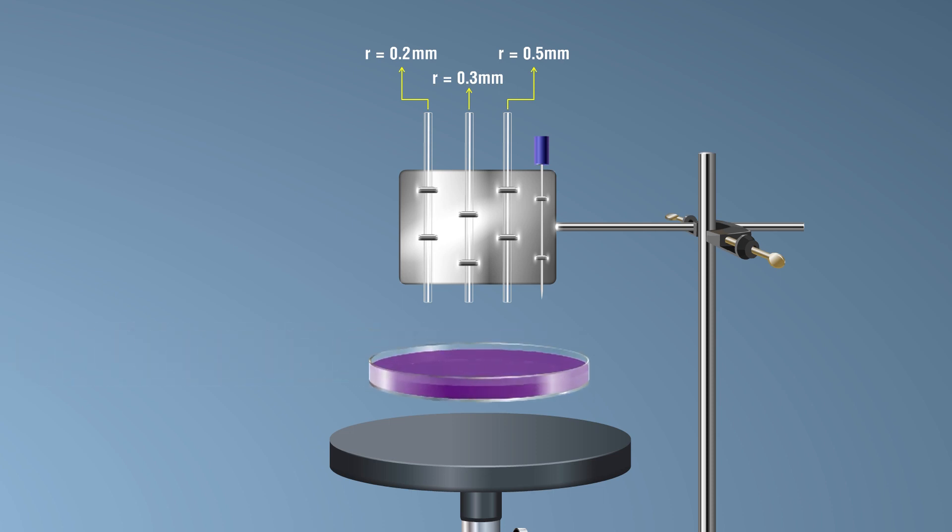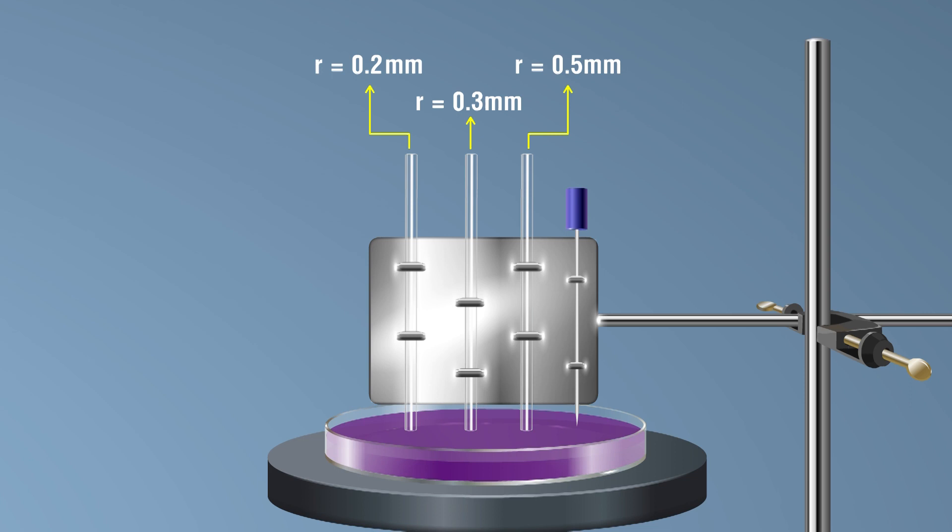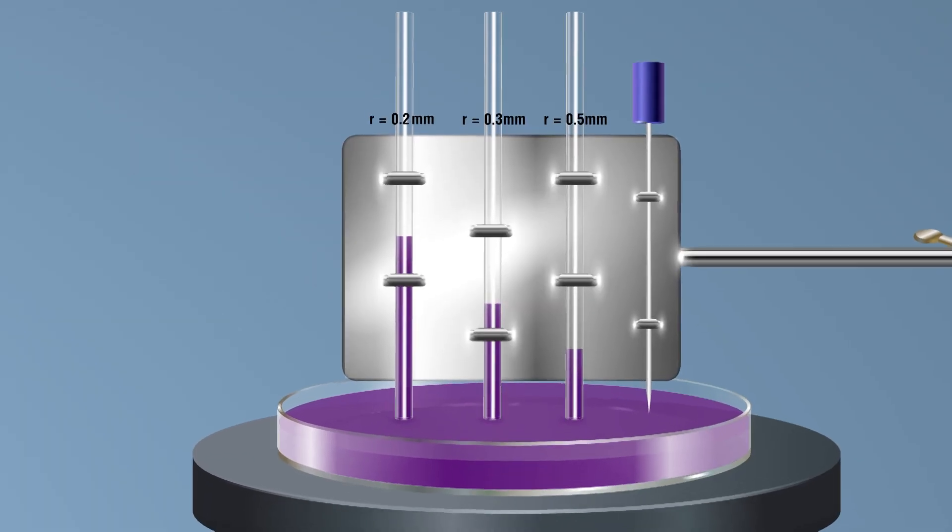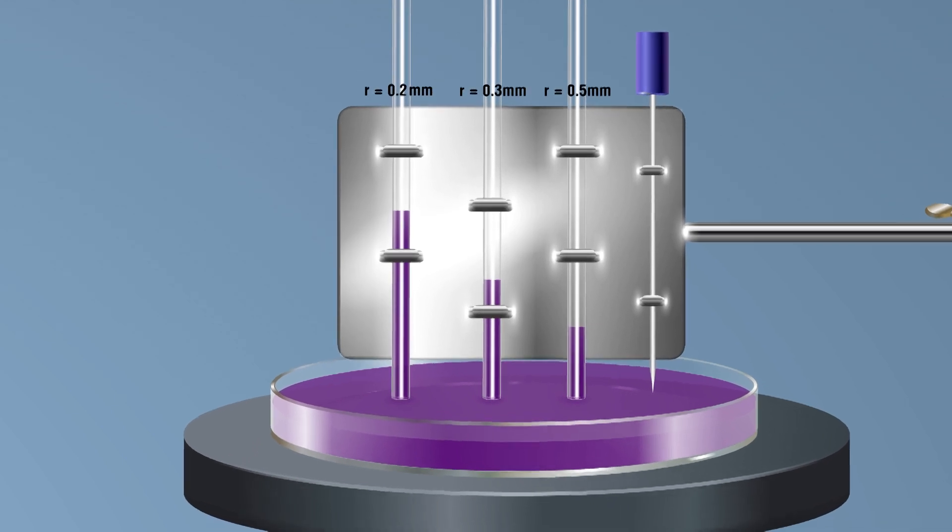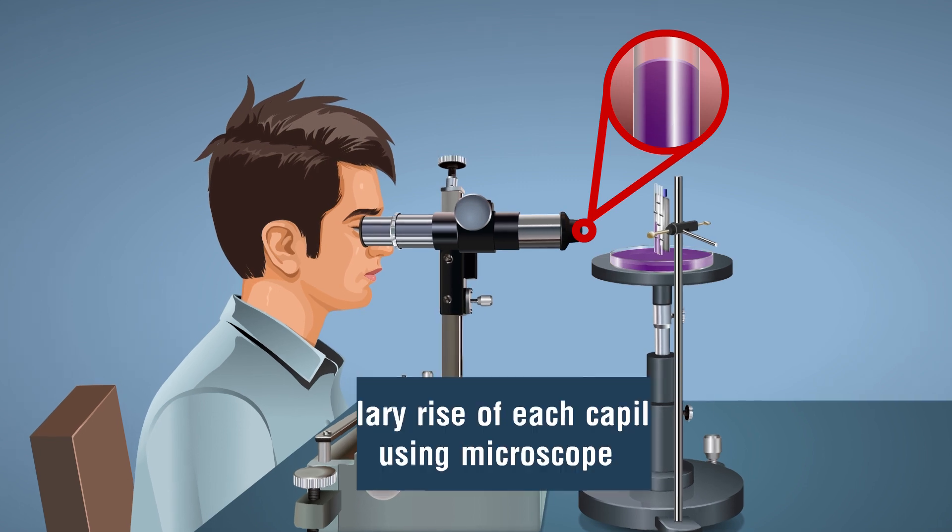Place the dish below the capillary tubes. Adjust the vertical stand so that the capillary tubes dip in the water. Adjust the pointer so that it just touches the surface of the water. Find the capillary rise using a traveling microscope.